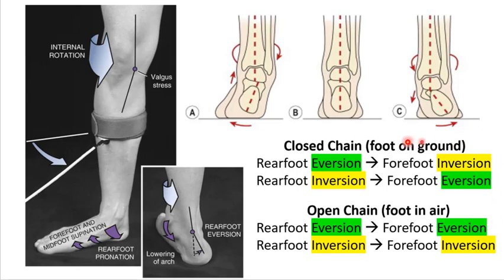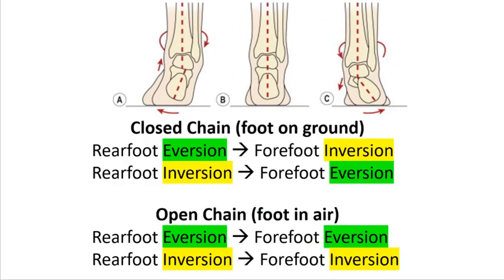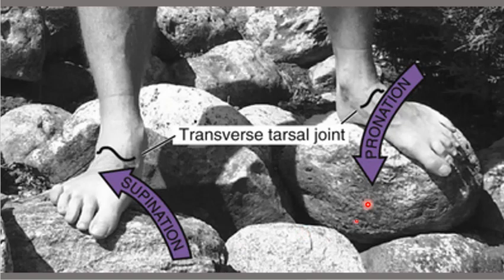Here's a summary chart. In open chain, the rear foot and forefoot are doing the exact same thing: if the rear foot is everting, so is the forefoot; if inverting, so is the forefoot. In closed chain when the foot's on the ground, you get opposite movements: rear foot everting creates forefoot inversion; rear foot inverting creates forefoot eversion. If you're getting rear foot eversion, you're collapsing your arch; if rear foot inversion, you're creating the arch. This mechanism exists so you can stand on uneven surfaces, your foot can adapt, you can push off, and not lose balance or performance.